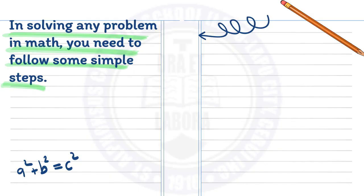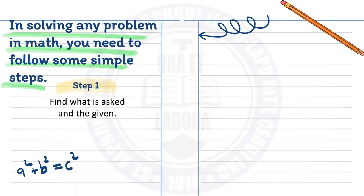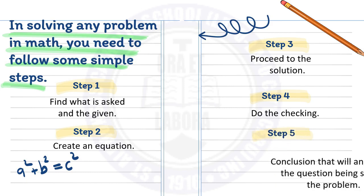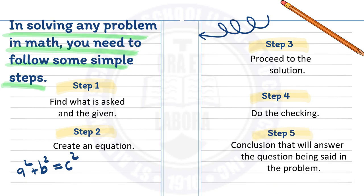In solving any problem in math, you need to follow some simple steps. Step 1: Find what is asked and the given. Step 2: Create an equation. Step 3: Proceed to the solution. Step 4: Do the checking. And step 5: Write a conclusion that will answer the question being asked in the problem.